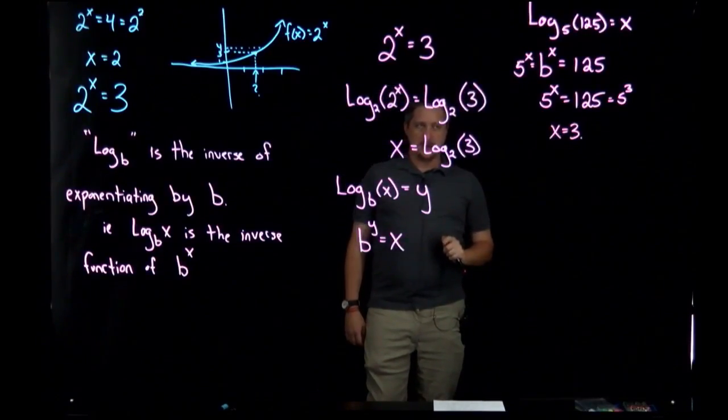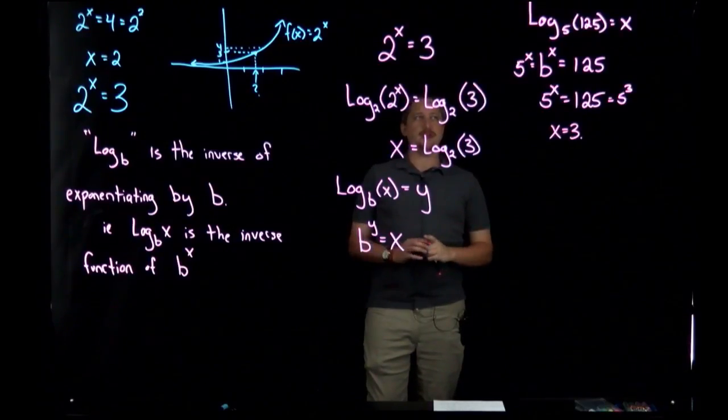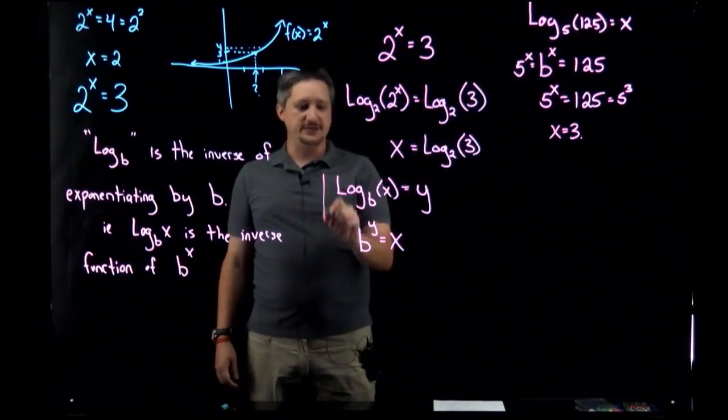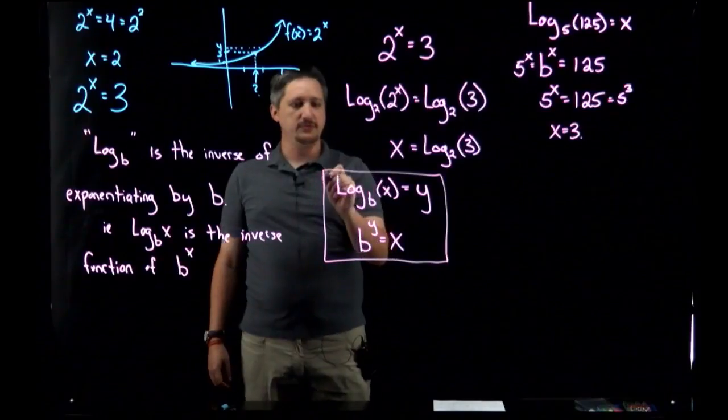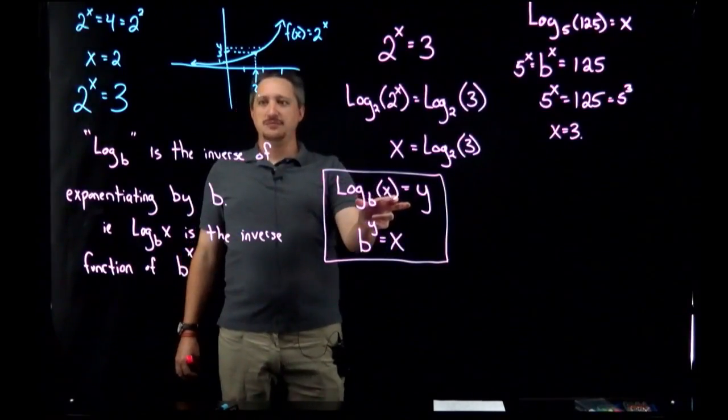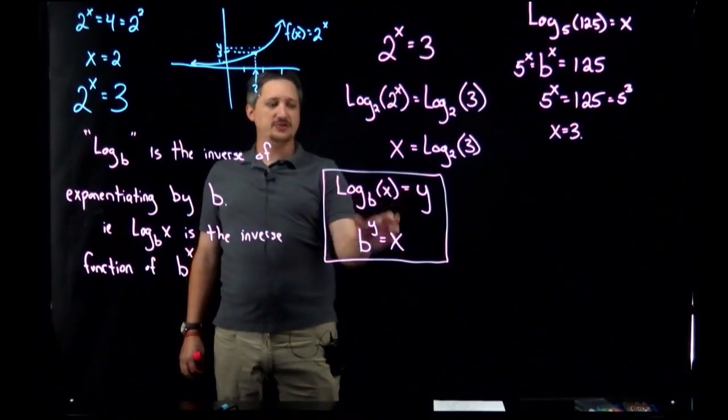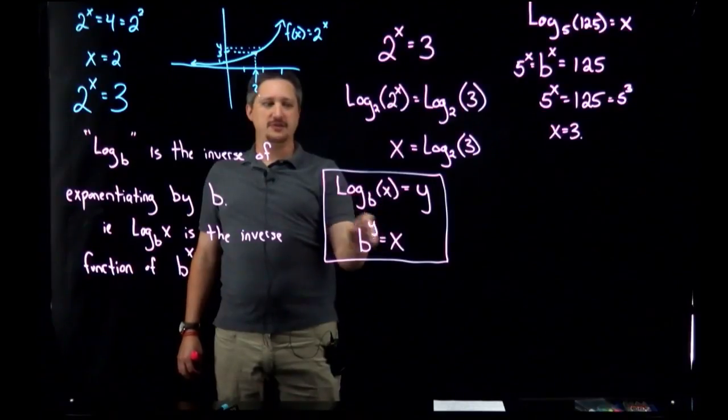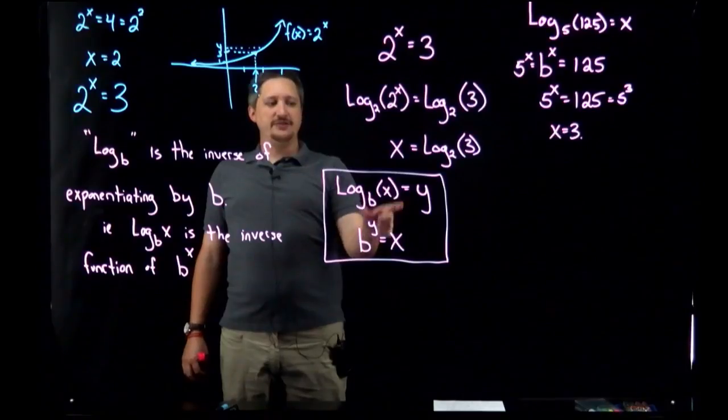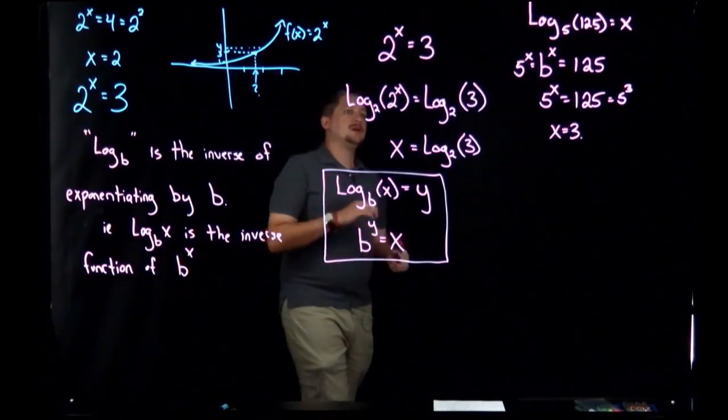Alright, so there's one other thing for the notation I want to mention, but just to be very clear here, this is the logarithmic form of that expression, this is the exponential form of that same expression. These are equivalent statements. Log base b of x equals y is the same as saying b^y = x, and it's often very helpful to go from one to the other.